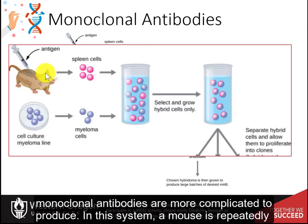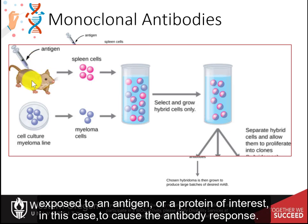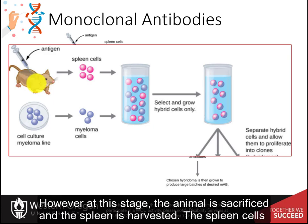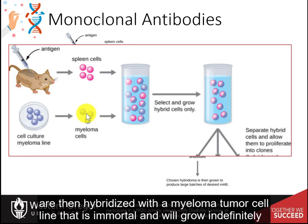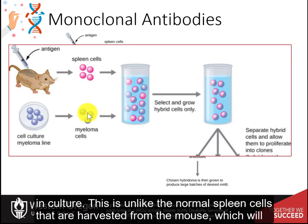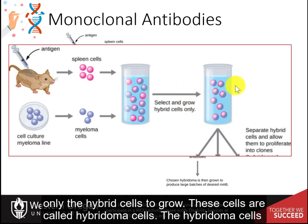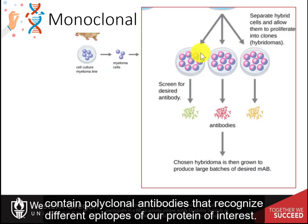In this system, a mouse is repeatedly exposed to an antigen, or a protein of interest, to cause the antibody response. This step is similar to what is seen in the production of polyclonal antibodies. However, at this stage, the animal is sacrificed and the spleen is harvested. The spleen cells are then hybridized with a myeloma tumor cell line that is immortal and will grow indefinitely in culture, unlike the normal spleen cells harvested from the mouse, which will die in culture. A special selection medium is then used to allow only the hybrid cells — called hybridoma cells — to grow. The hybridoma cells contain polyclonal antibodies that recognize different epitopes of the protein of interest.